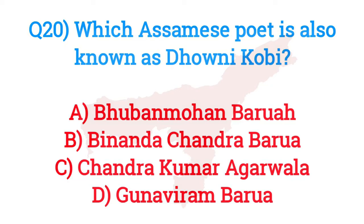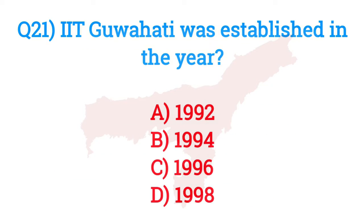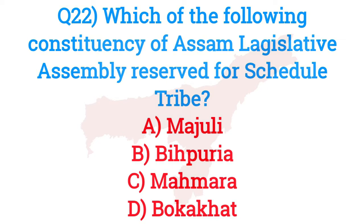Question number twenty: Which Assamese poet is also known as Dhwani Kobi? The answer is option B — Binanda Chandra Barua. Question number twenty-one: IIT Guwahati was established in which year? The answer is option B — 1994.